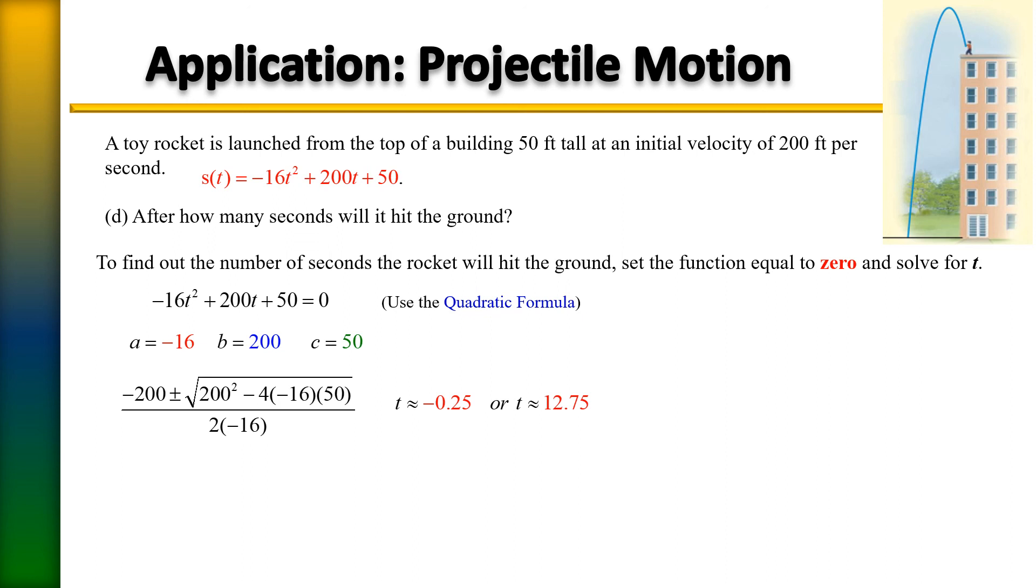And here we get two solutions. We get that t is negative 0.25 and t is 12.75. So we want to know at what point that it hits ground level. So we need a number. We're going to throw out the negative because time is never thought of in terms of negatives. Time can only be a positive number. So therefore, after how many seconds will it hit the ground? Well, it'll be approximately 12.75 seconds for the toy rocket to hit the ground.